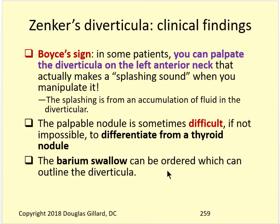Clinical findings: there's the Boy's Sign - that's one to put a star next to. In some patients, you can actually palpate that diverticula if it starts to wrap around to the front of the neck a little bit, more on the lateral part of the neck. Some of them can wrap around and actually make a splashing, gurgly sound. If there's fluid in it, you can kind of make it gurgle. Sometimes it's difficult to tell from a lymph node or something. Barium swallow makes the diagnosis - you order a barium swallow and you can see it.